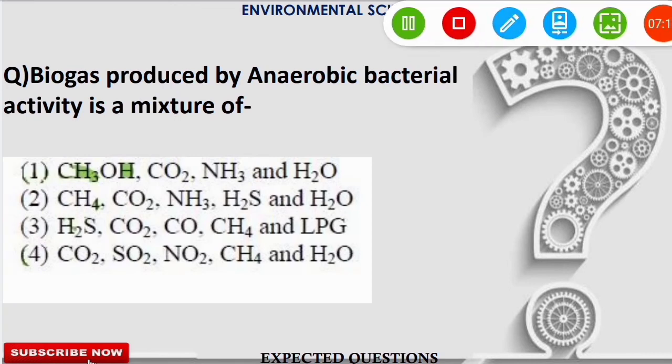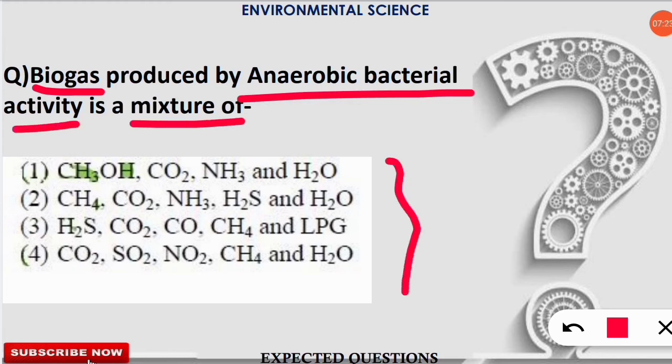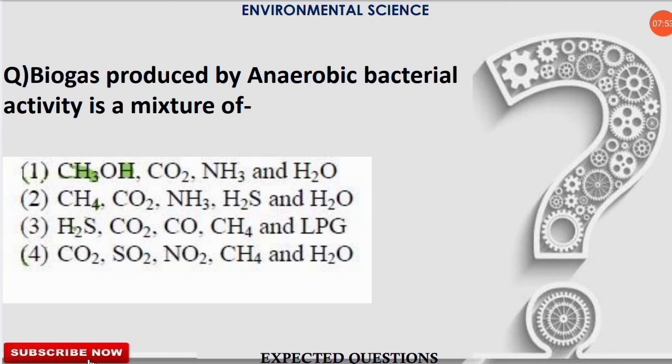The next question is on your screen. Biogas produced by anaerobic bacterial activity is a mixture of each of the following gases. Here you have to think attentively and carefully because it is very confusing. The correct option is option number 2. From biogas produced by anaerobic bacterial activity, the release of methane is seen along with carbon dioxide, ammonia, hydrogen sulfide, and water. This is very important - it has been asked several times with different twists. You have to remember these 5 gases.